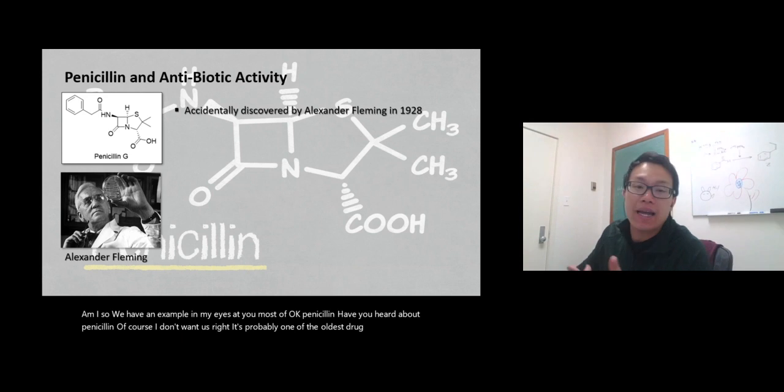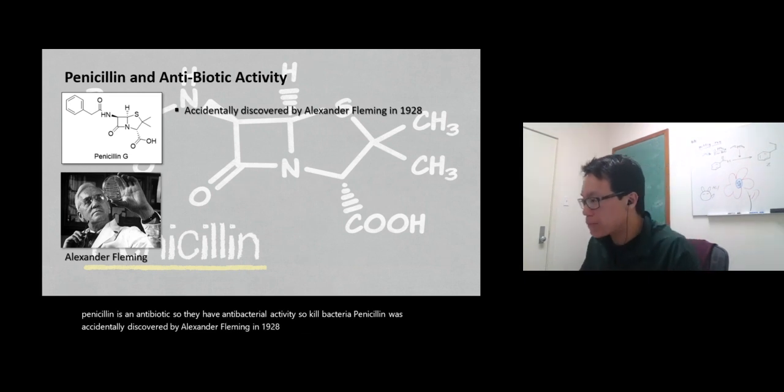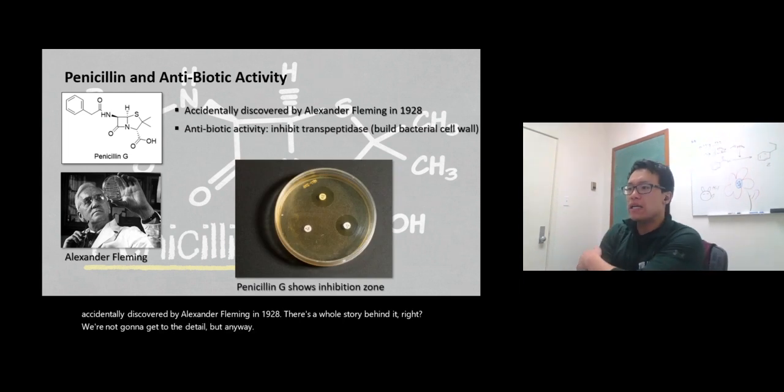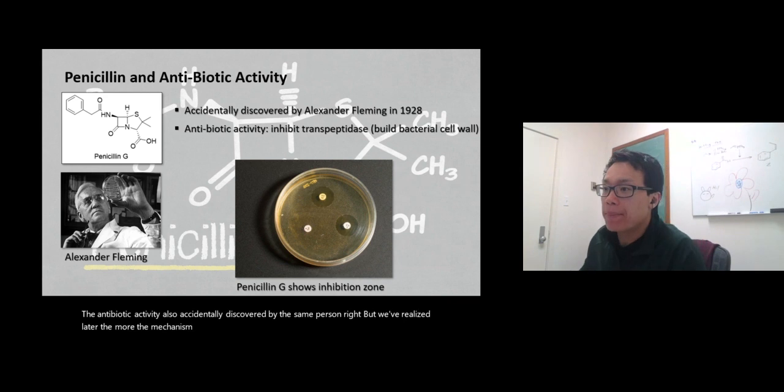Penicillin is an antibiotic - it has antibacterial activity, kills bacteria. Penicillin was accidentally discovered by Alexander Fleming in 1928. There's a whole story behind it, but we're not gonna get to the detail. The antibiotic activity was also accidentally discovered by the same person, but we realized later the mode of mechanism.